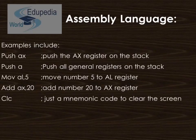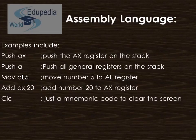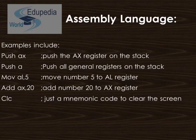Examples of assembly language instructions are as follows: PUSH AX simply pushes the AX register onto the stack; PUSHA pushes all general registers onto the stack. These are reserved words of assembly language. MOV AL, 5 simply moves number 5 to the AL register. ADD 20 to AX adds the integer 20 to register AX. CLC is a mnemonic code to clear the screen. Thus we can see the working is much simpler now for the user.